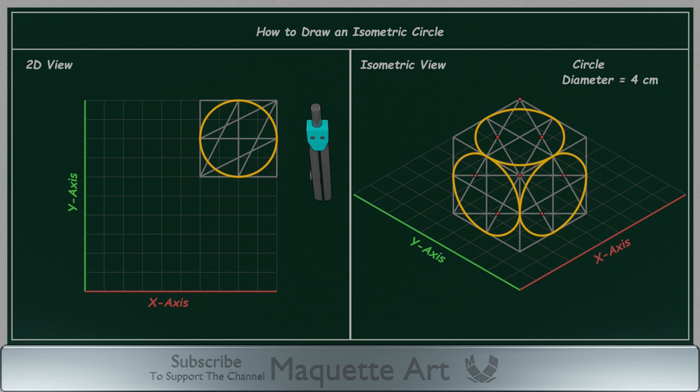Those are the 3 different positions of a circle that you will need in isometric drawings, and the method is the same in all of them.